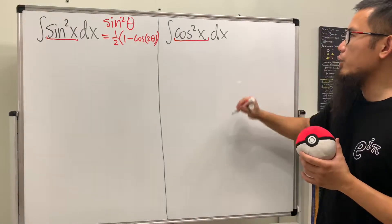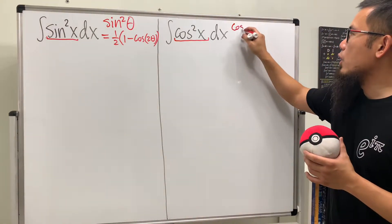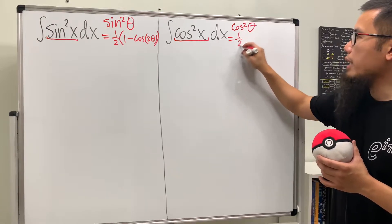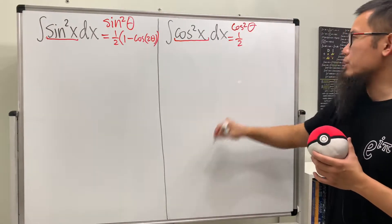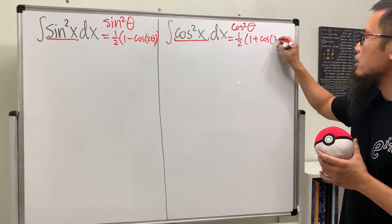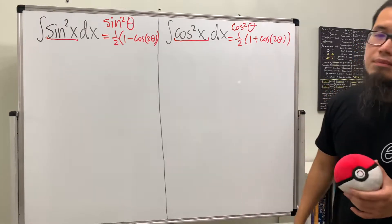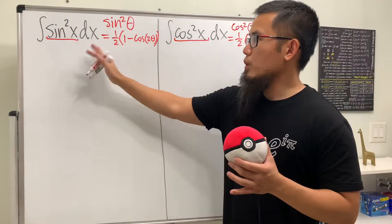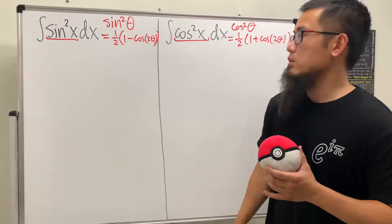Similarly, let me also tell you guys the identity right here. Cosine squared theta, this is equal to 1 half. It's very similar to that one. It's just 1, but plus cosine of 2 theta. So, you pretty much, once you finish this, you pretty much know the other one, right?